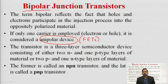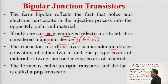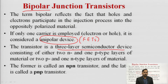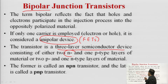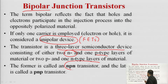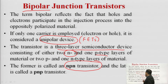This transistor is a 3-layer semiconductor device consisting either of 2 N-type and 1 P-type, or 2 P-type and 1 N-type material. Based on this, if we use 2 N-type and 1 P-type it is known as an NPN transistor, and the latter is known as a PNP transistor.